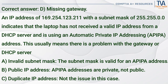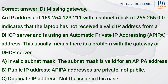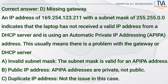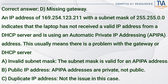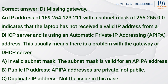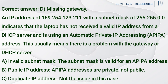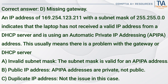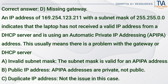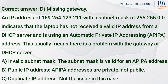Correct answer: D. Missing gateway. An IP address of 169.254.123.211 with a subnet mask of 255.255.0.0 indicates that the laptop has not received a valid IP address from a DHCP server and is using an APIPA address. This usually means there is a problem with the gateway or DHCP server. The subnet mask is valid for an APIPA address (A). APIPA addresses are private, not public (B). Duplicate IP address (C) is not the issue in this case.